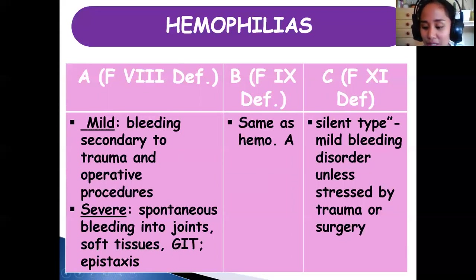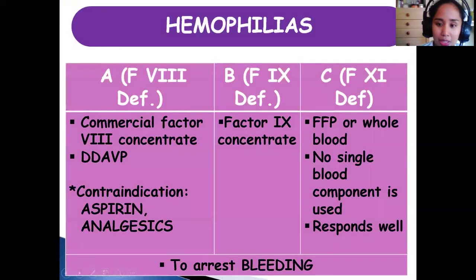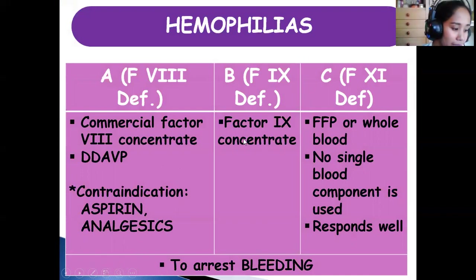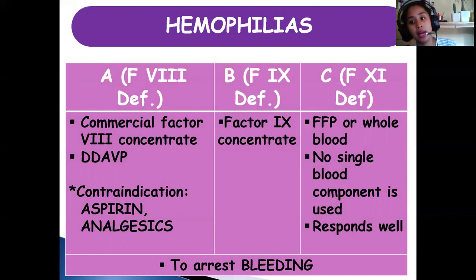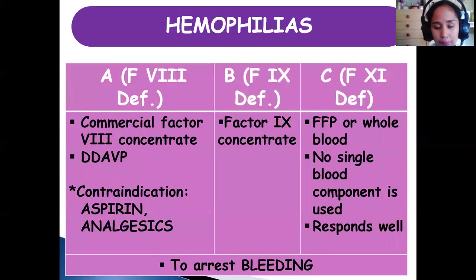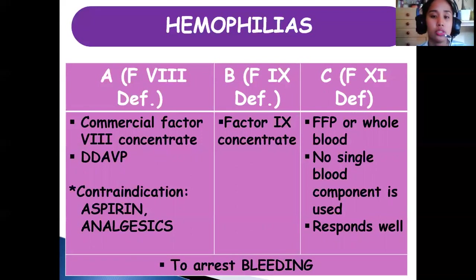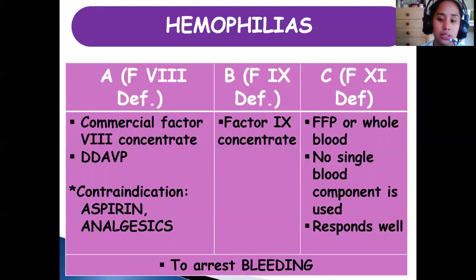These are the treatments for hemophilia. DDAVP — desmopressin or 1-deamino-8-D-arginine vasopressin — promotes the production of factor 8 from exogenous sources. Aside from DDAVP, we need to increase factor 8 concentrates for hemophilia A, factor 9 concentrates for hemophilia B, and factor 11 concentrates for hemophilia C.